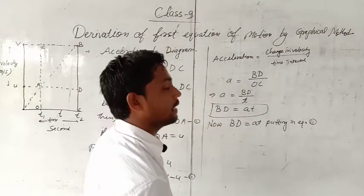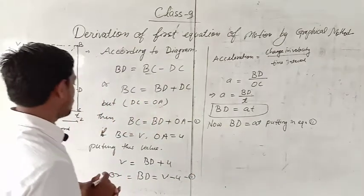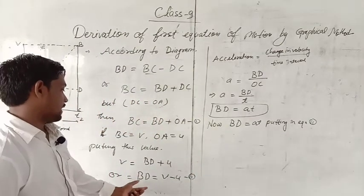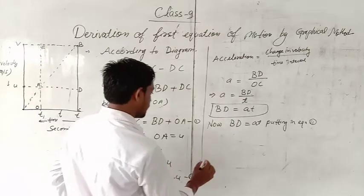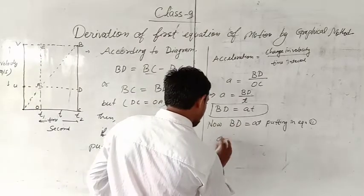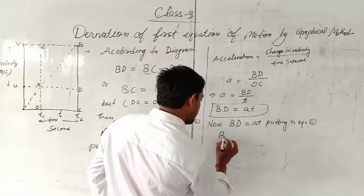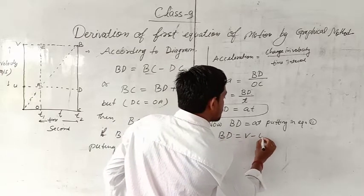The value of BD that we have found, we will put that value in equation second. BD equal to V minus U.